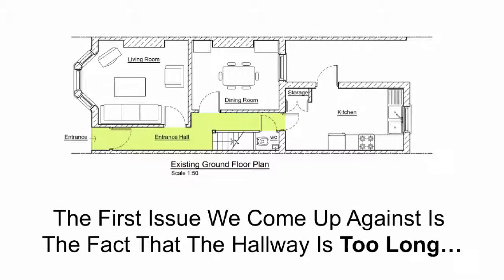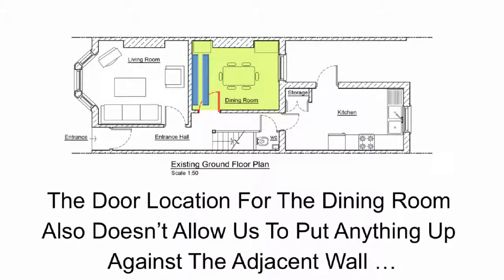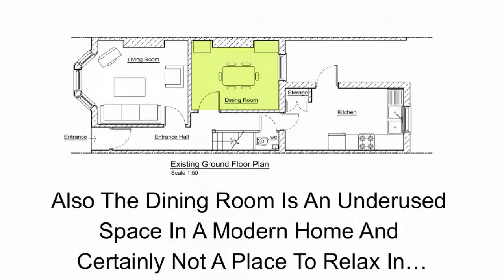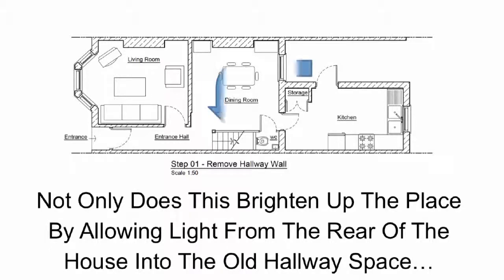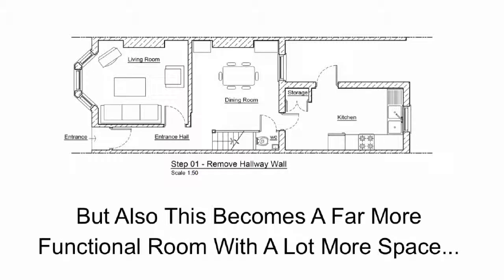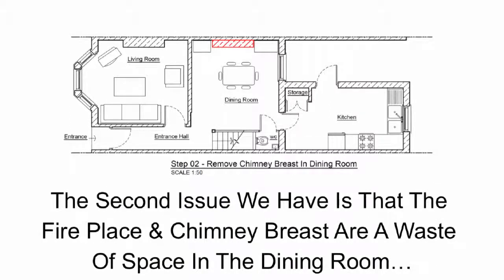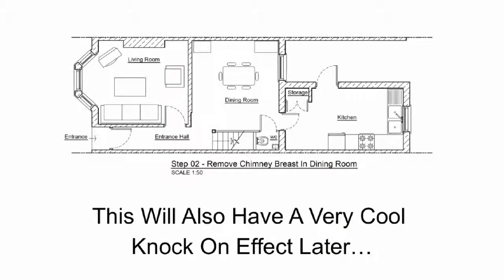The first issue we come up against is that the hallway is too long. You get natural light coming in at the front of the house but it soon peters out the further you walk into the property. The door location for the dining room also doesn't allow you to put anything up against the adjacent wall because it will be in your way as you enter the room and make it feel claustrophobic. Also the dining room is an underused space in a modern home. A tried and tested solution is to remove the wall between the dining room and the hallway — not only does this brighten up the place by allowing light from the rear of the house into the old hallway space, but it also becomes a far more functional room with a lot more space. We will also remove the old chimney breast and fireplace in the dining room to free up some space, which will have a very cool knock-on effect later on when we move to the first floor.